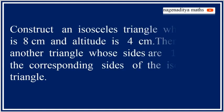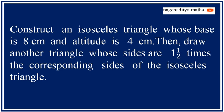Today we are going to construct a triangle with the given data. Construct an isosceles triangle whose base is 8 cm and altitude is 4 cm. Then draw another triangle whose sides are 1 and 1/2 times the corresponding sides of the isosceles triangle.